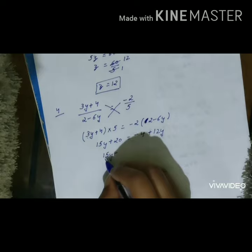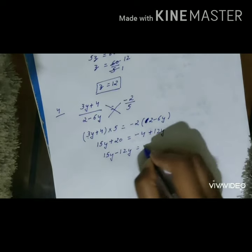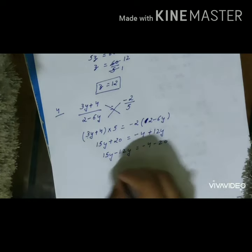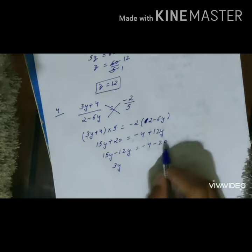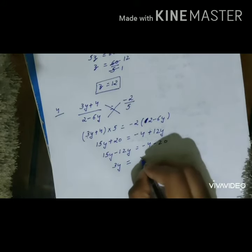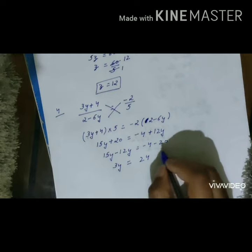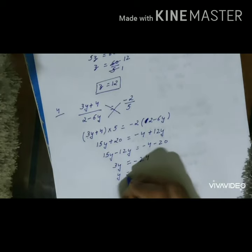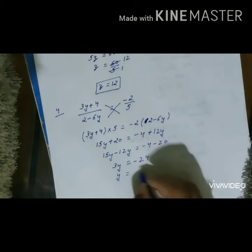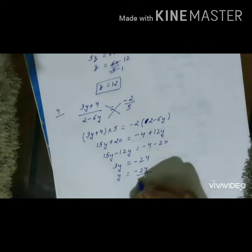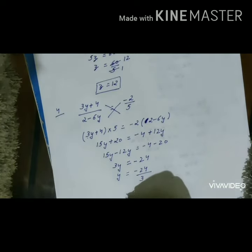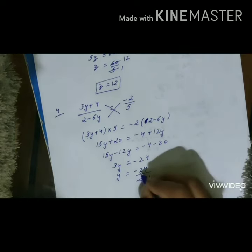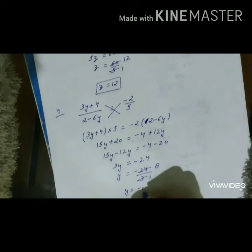After transposing, we get 15y - 12y = -4 - 20. 15y - 12y = 3y. Here, -4 - 20: since 20 is greater and has a negative sign, we use a minus sign, giving 3y = -24. After transposing 3 to RHS, we get y = -24/3. After reducing, y = -8.